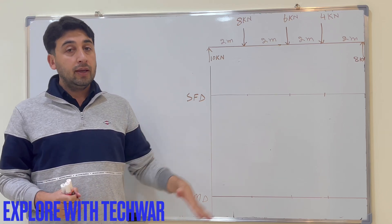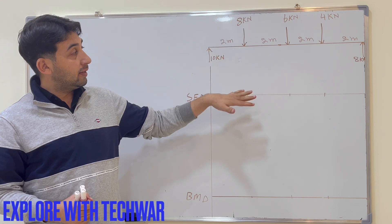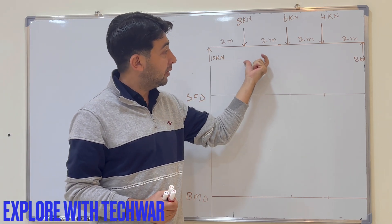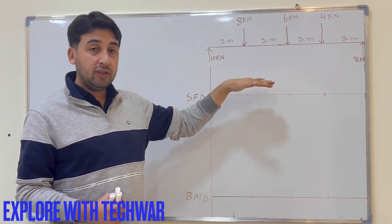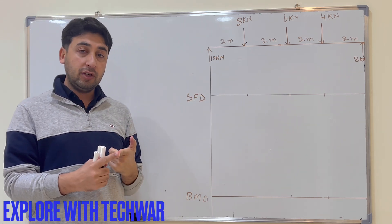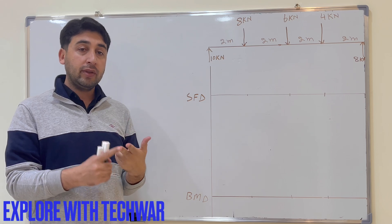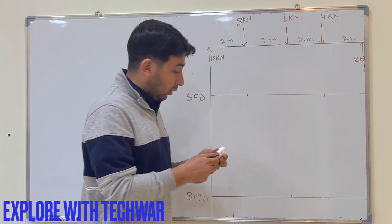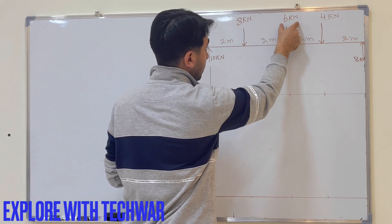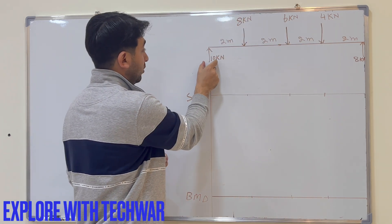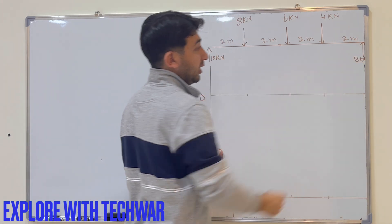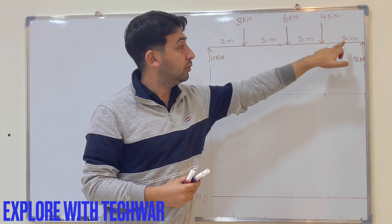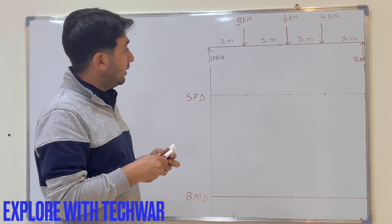In this video we will solve an example to draw the shear force and bending moment diagram of a beam. The reaction forces and length of the beam are given. We have three forces acting downward: 8 kN, 6 kN, and 4 kN. Two reaction forces act upward: 10 kN and 8 kN. The beam is 8 meters long with 2-meter segments.